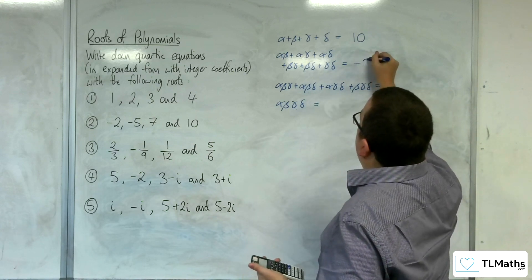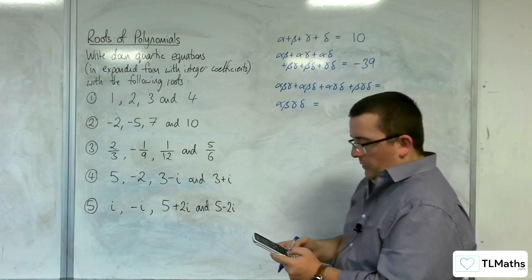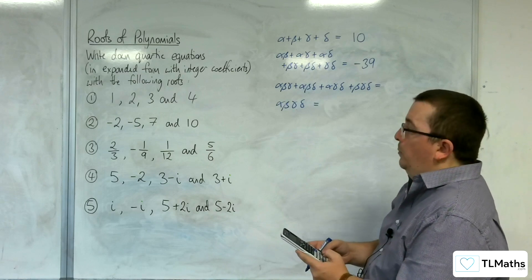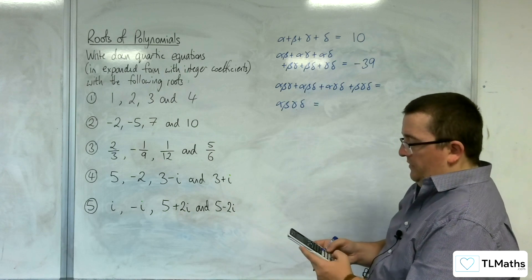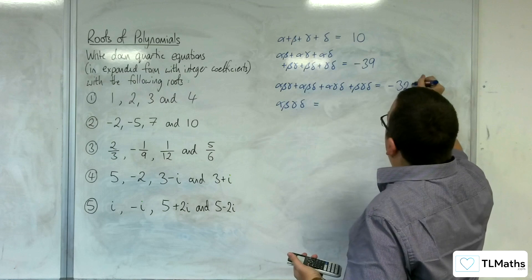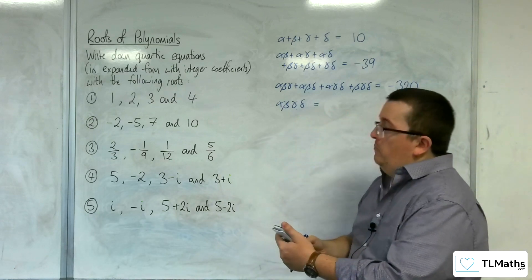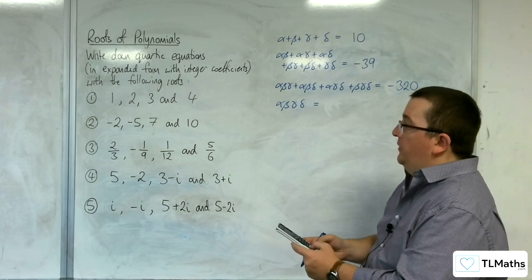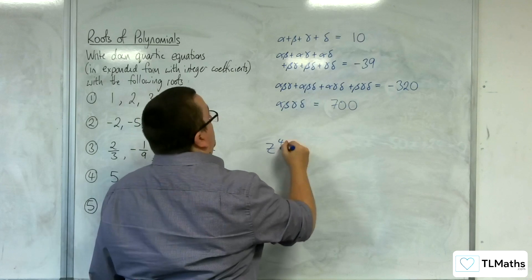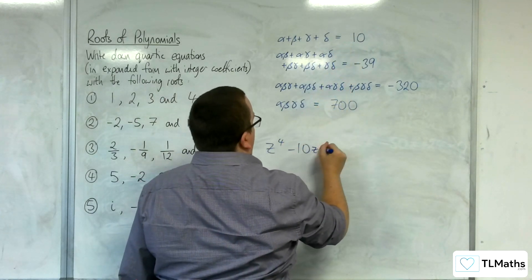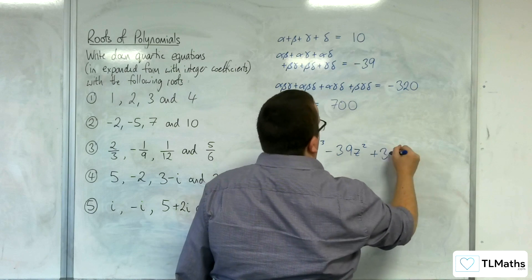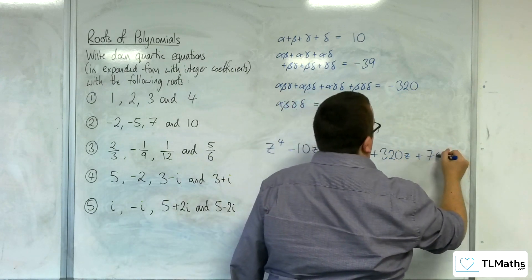And we've got minus 2 times minus 5 times 7, plus minus 2 times minus 5 times 10, plus minus 2 times 7 times 10, then plus minus 5 times 10 — and that gets us minus 320. And then the product of all four roots: minus 2 times minus 5 times 7 times 10, gets us 700. So we would have z to the 4, take away 10z cubed, then take away 39z squared, then plus 320z, plus 700, equals 0.